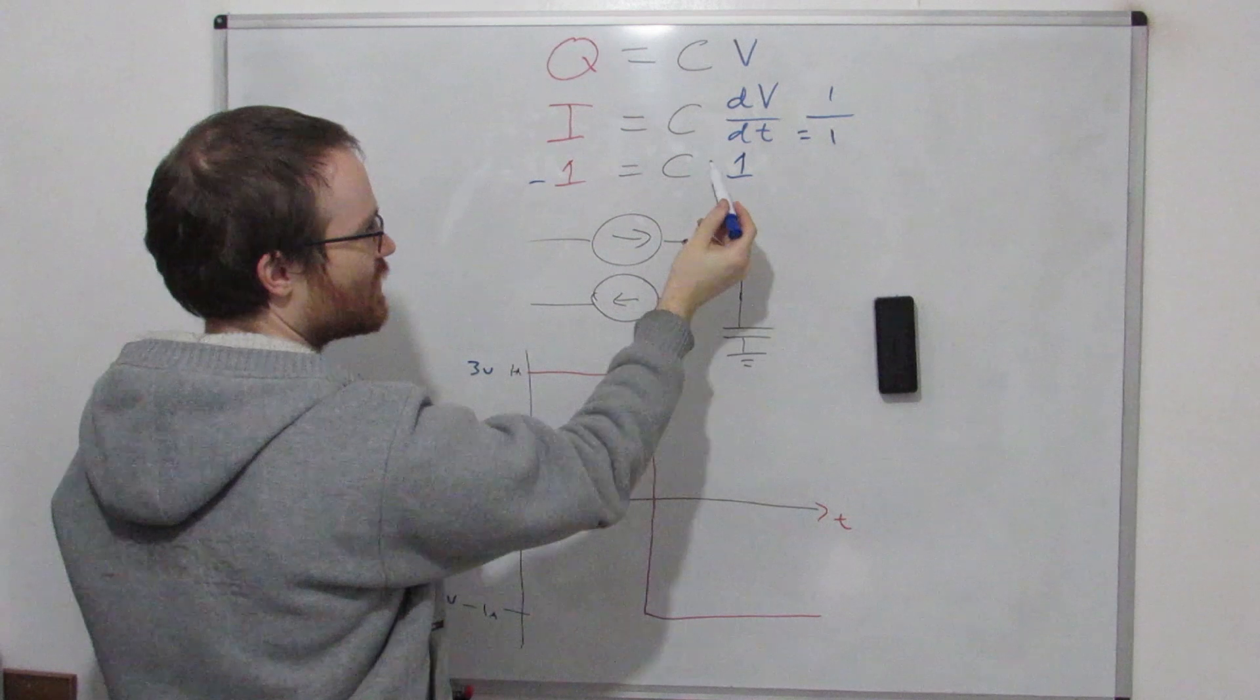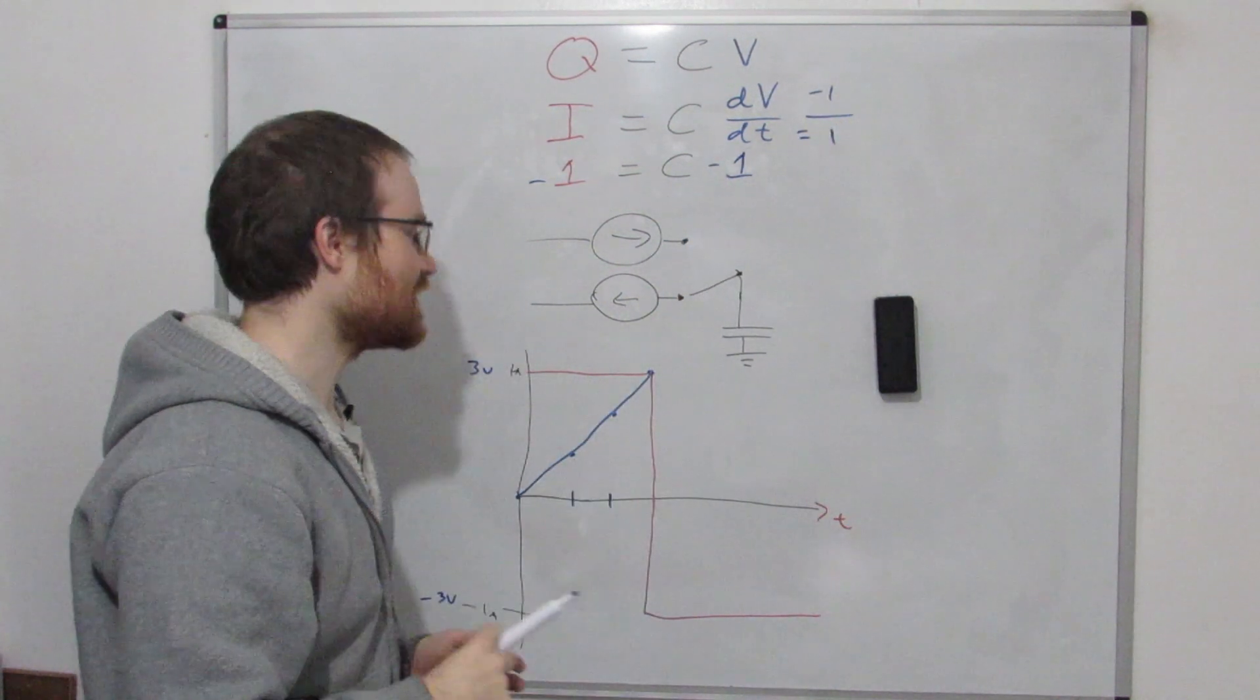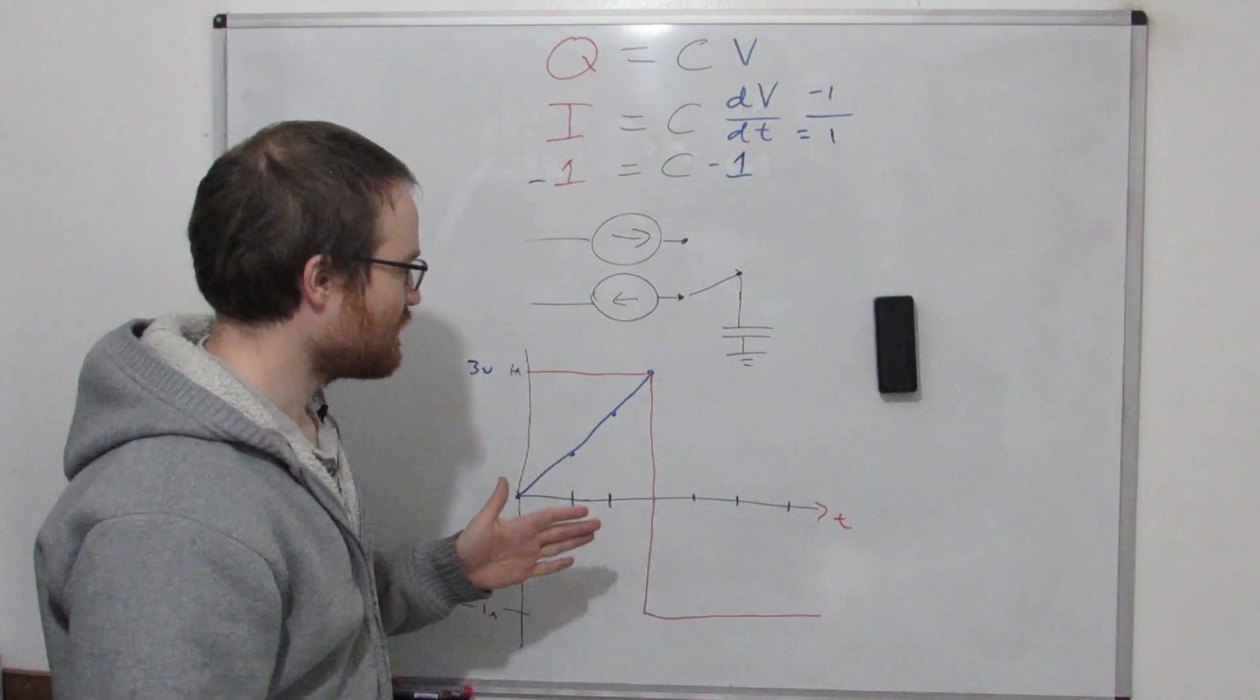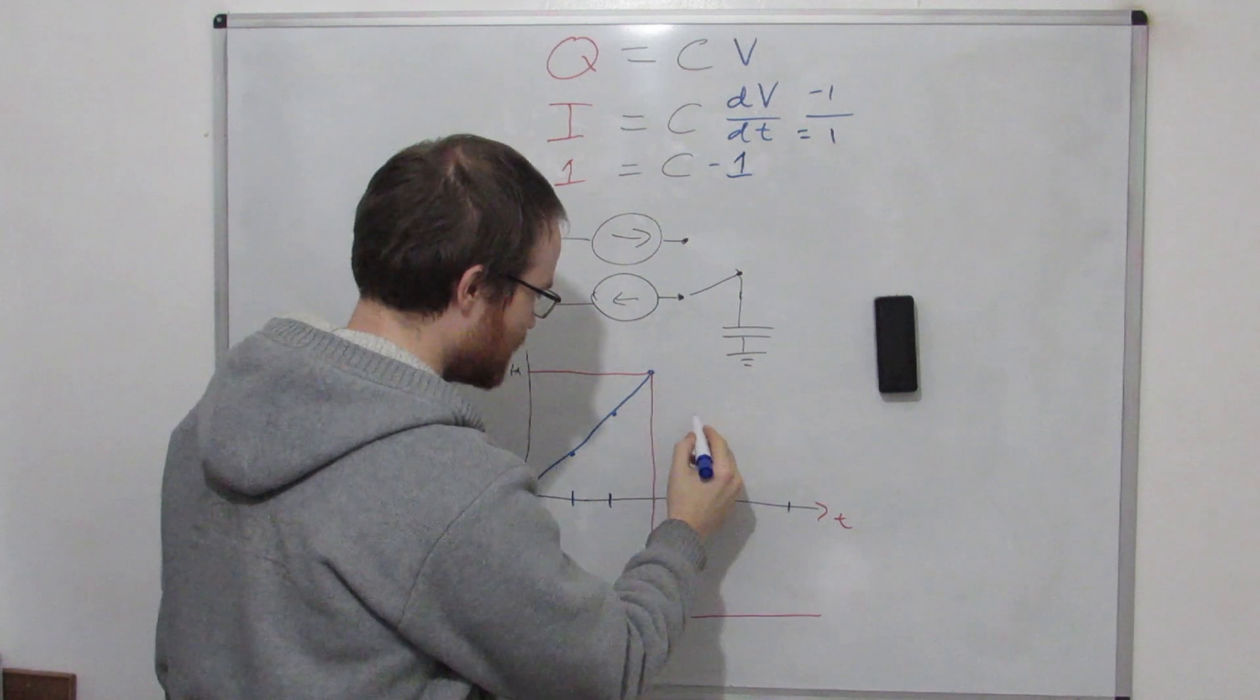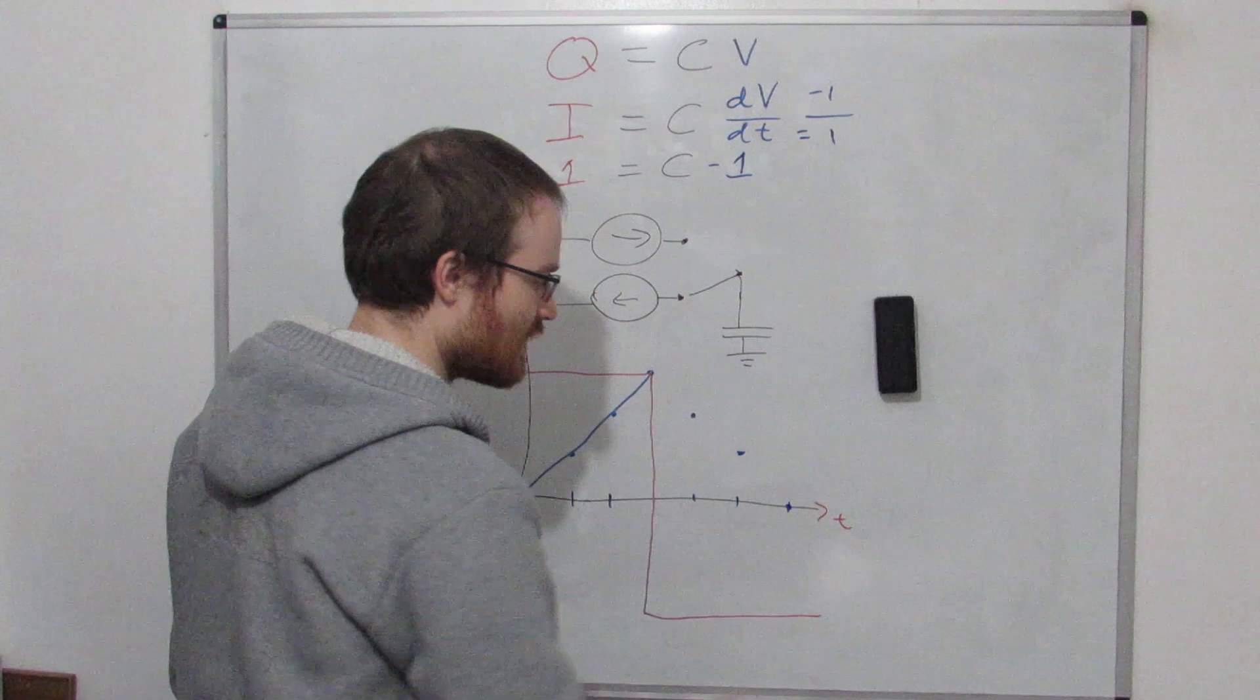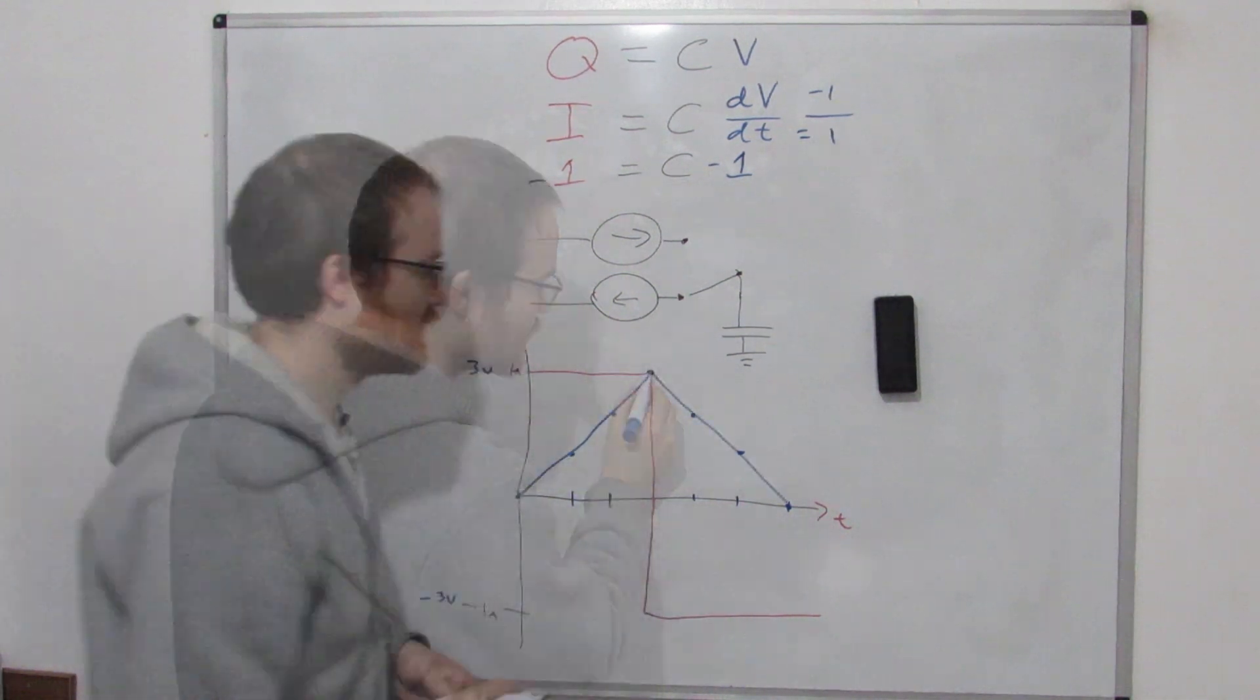We can't minus time. Time goes in one direction, unfortunately. To make these two sides equal, if this is minus one, we want this to be minus one as well. So this has to be minus one. So now for every one step in time, we're going to have to go down a volt. We'll go across one step, down one volt, and then we'll go across one step and down another volt, across one step and down another volt, and now we're back to zero volts.